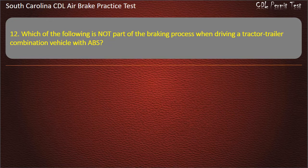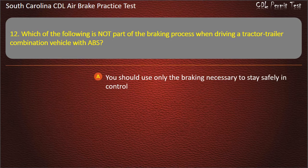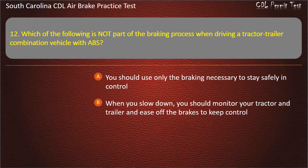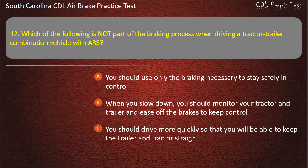Question 12: Which of the following is not part of the braking process when driving a tractor-trailer combination vehicle with ABS? You should use only the braking necessary to stay safely in control; when you slow down, you should monitor your tractor and trailer and ease off the brakes to keep control; or you should drive more quickly so that you will be able to keep the trailer and tractor straight.